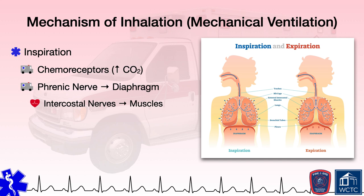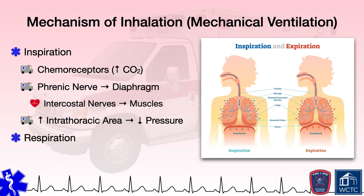The diaphragm flattens and moves downward—inferiorly from the chest cavity—while the intercostal muscles pull the ribs up and out. This increases the intrathoracic area within the chest cavity, thus reducing the pressure within it. Because the atmospheric pressure external to the body is higher than the now lower intrathoracic pressure within the chest cavity, air enters the lungs. Once air enters the lungs, the process of respiration can occur.